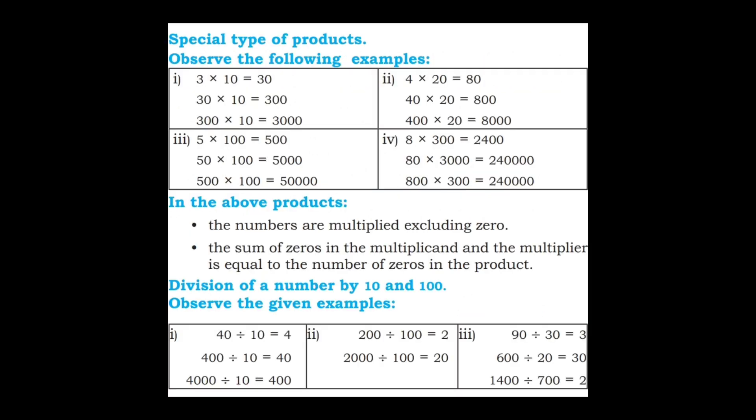Next: Special type of products. Observe the following examples. 3 into 10 is 30, 30 into 10 is 300, 300 into 10 is 3000. 4 into 20 is 80, 40 into 20 is 800, 400 into 20 is 8000. 5 into 100 is 500, 50 into 100 is 5000, 500 into 100 is 50,000. 8 into 300 is 2400 (8 threes are 24), 80 into 3000 is 2,40,000, 800 into 3000 is 24,00,000.